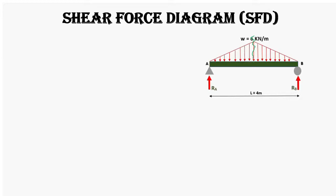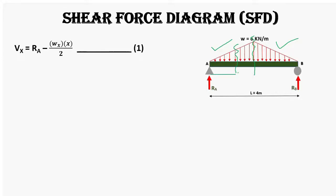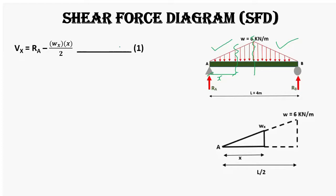Let's derive a shear force equation. The beam is 4 meters long; if we cut it into two halves, both halves are symmetrical with the same loading pattern and same support reactions. We will derive the shear force equation for one half and replicate it in the opposite direction for the other. We consider the shear at distance x from support A, where the point of loading intensity is Wx, with the distributed load being 6 kilonewton per meter. RA is upward (positive) and the triangular loading is downward (negative).